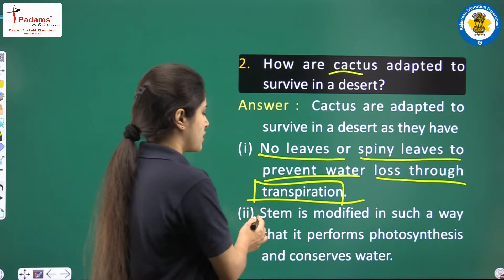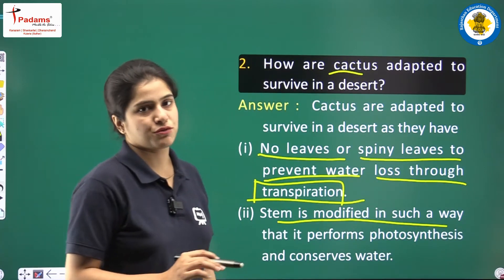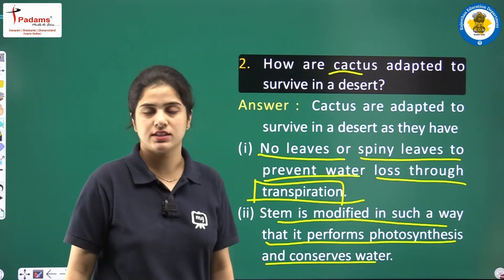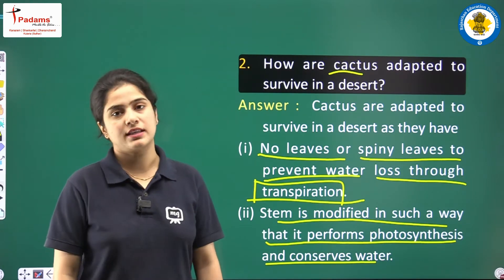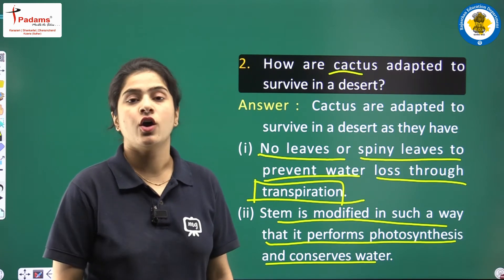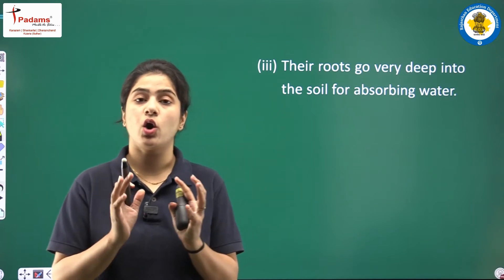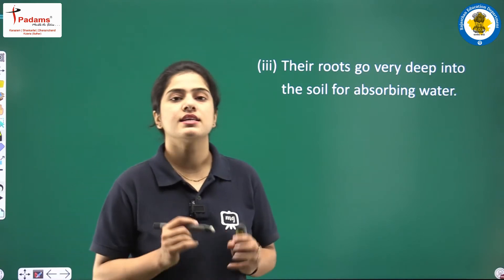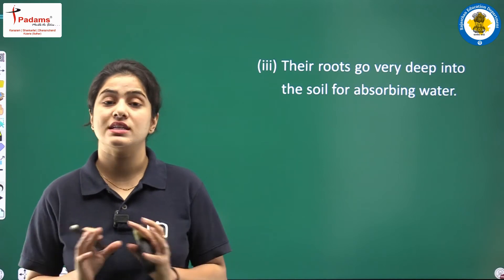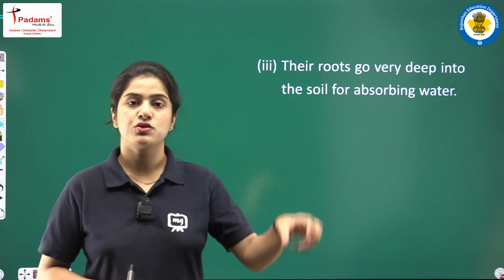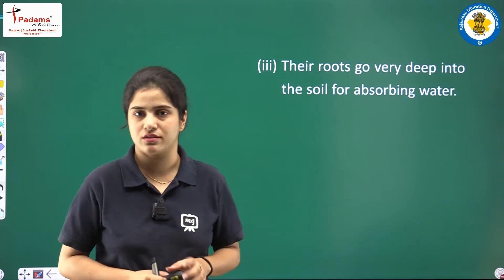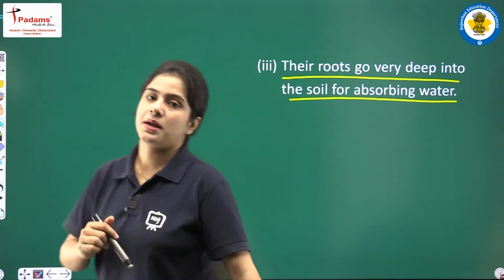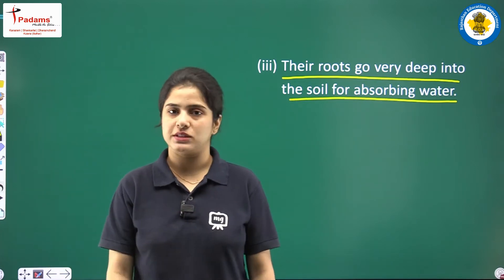The stem is modified in such a way that it performs photosynthesis and conserves water. And lastly, the cactus roots are very deep. In deserts, the topmost layer of soil is very intensely hot, so to get water, the roots have to go very deep into the soil to absorb water.